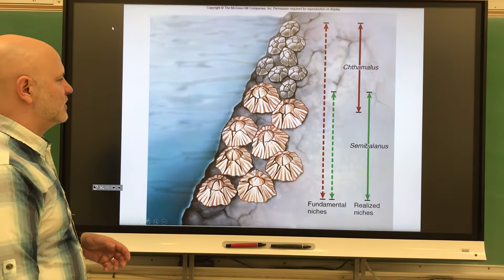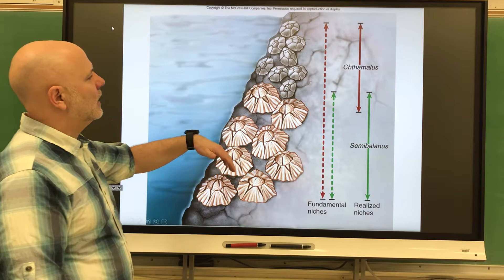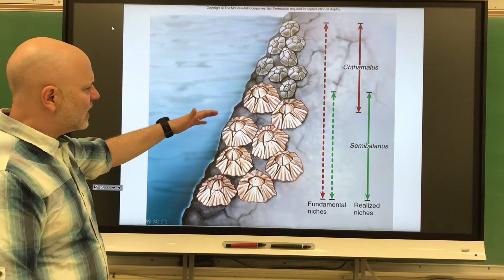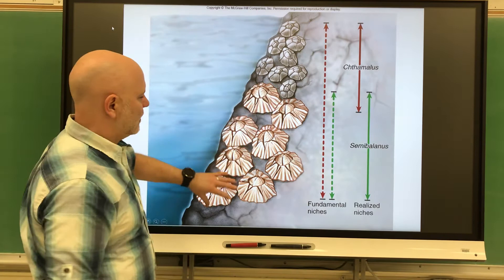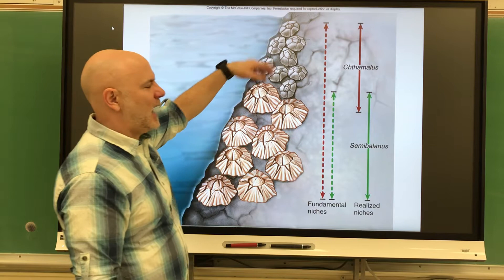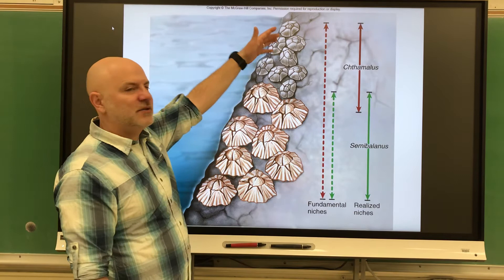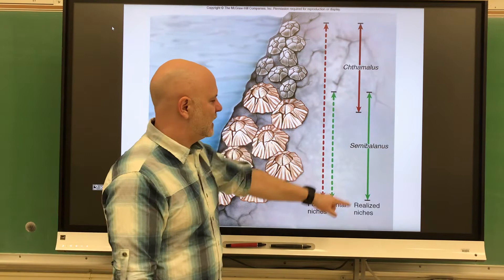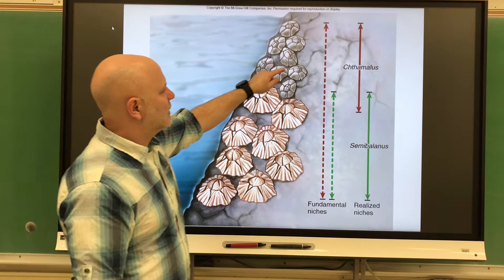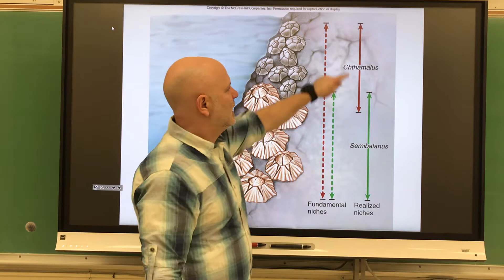Several years ago, experiments were done in the North Atlantic areas of the United States — Massachusetts or Maine — where two types of barnacles grow. In some areas the larger barnacles were removed, and in others the smaller barnacles were removed. When together, larger barnacles are found lower in the water column and smaller barnacles higher up. When the smaller barnacles were removed, the larger barnacles didn't move up into that area. But when the larger barnacles were removed, the smaller ones moved down. So for the larger barnacles, the realized niche and fundamental niche were the same. For the smaller barnacles, the fundamental niche was a much larger area, but due to competition, the realized niche was reduced.